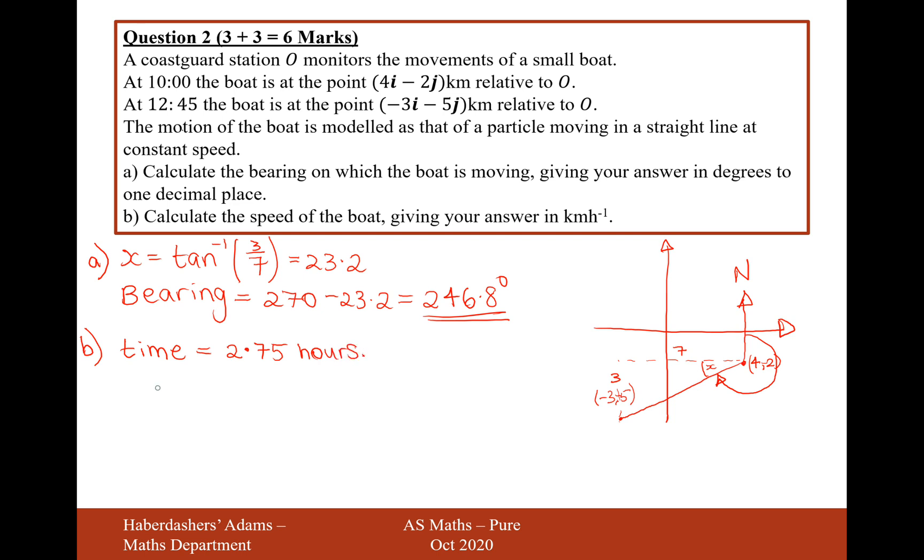Now we need to work out the distance the boat has traveled. Distance. And we'll do that by doing a Pythagoras calculation. So it's going to be 7 squared plus 3 squared. And 7 squared plus 3 squared is the square root of 58.